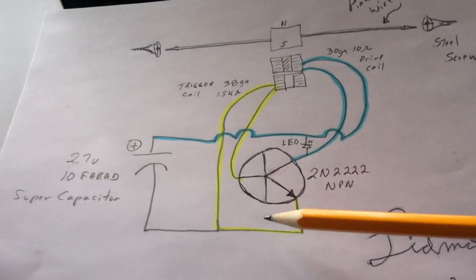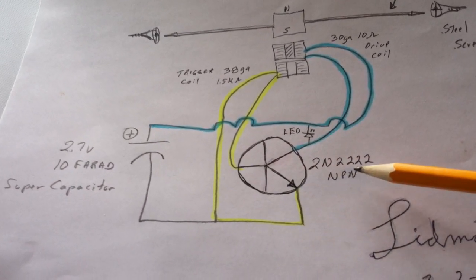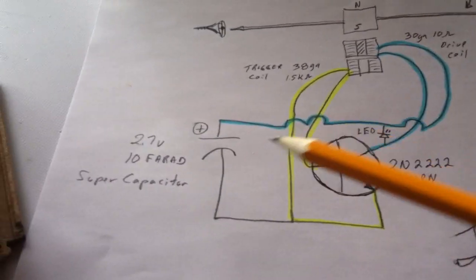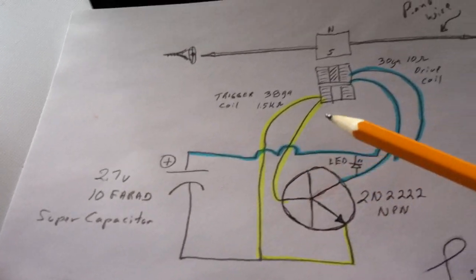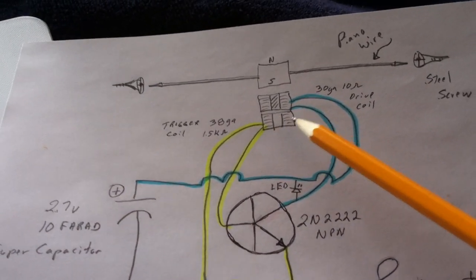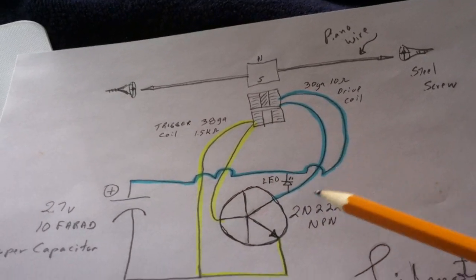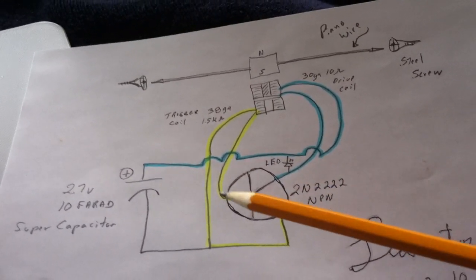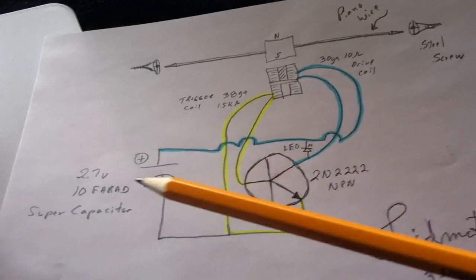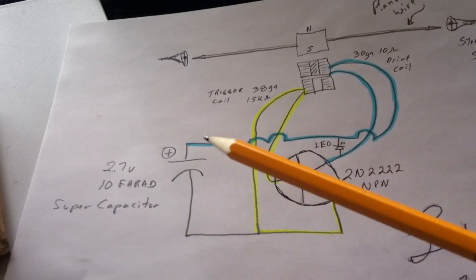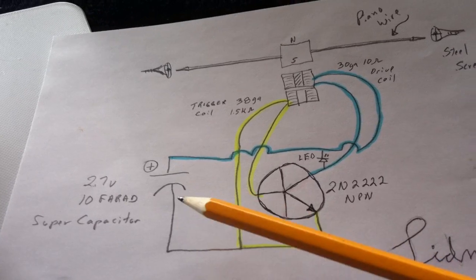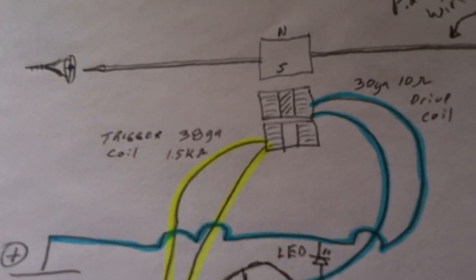And then it's just a 2N2222 NPN. There's the circuit diagram with the back coil being the fine wire telling the transistor to open and then the drive coil here. Very simple. There's no resistors or any other capacitors except the super cap. It'll run on a AA battery too, no problem.